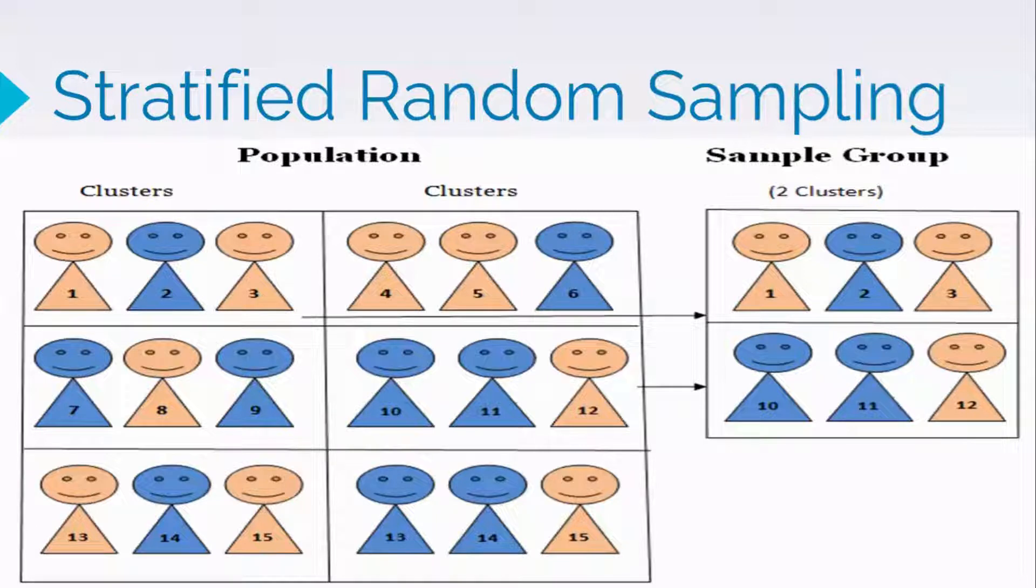Stratified random sampling is used when the population is made up of groups of items with different characteristics. It consists of selecting a simple random sample for each group, into which the population has been subdivided. This is done so that the stratum size in the sample is proportional to the population.